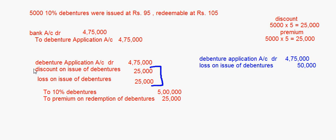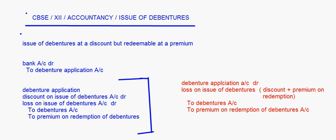When you understand that we have two things here — discount and loss — discount is also a loss, so we can add both of them and put them as loss on issue of debentures. So this was the case of issue of debentures at a discount and redeemable at a premium. Now we are going to look at the case when debentures are issued at a premium and also redeemable at a premium.